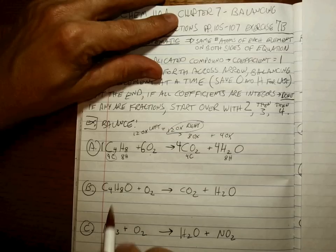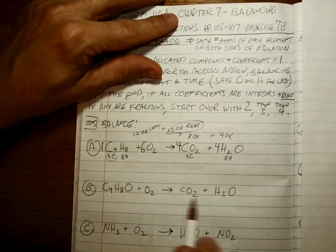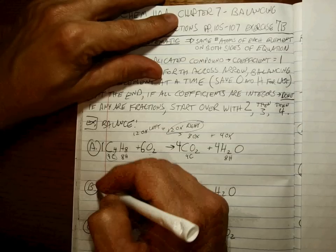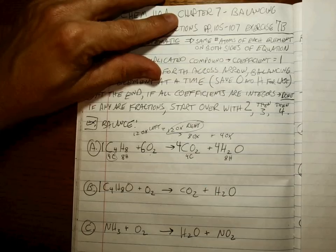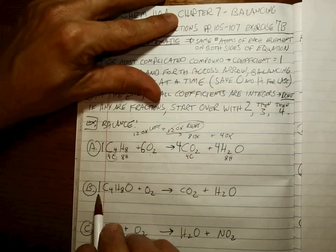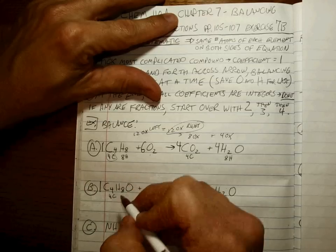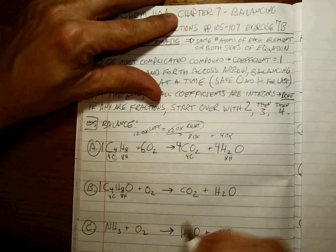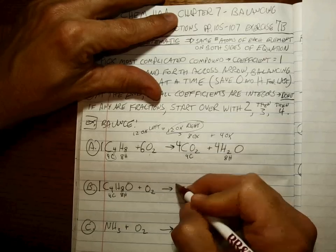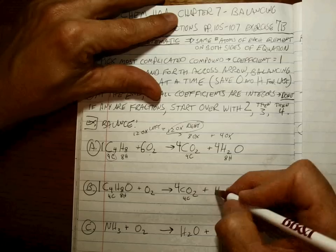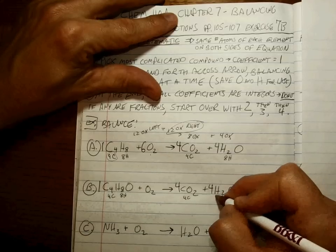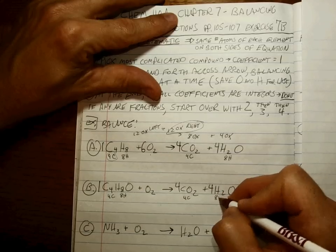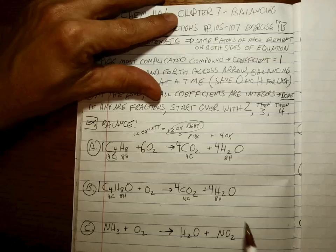Let's try another one. Again, clearly the most complicated molecule out of all these, it's going to be this guy. So if that's a 1, once again we have 4 carbons, which means to get 4 carbons, that's a 4. To get 8 hydrogens, that's a 4.